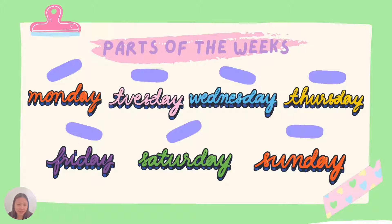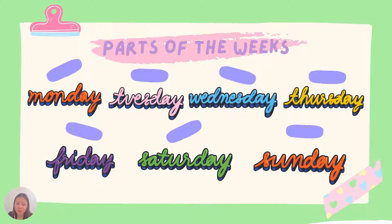What are the parts of the week? Let's have Monday, Tuesday, Wednesday, Thursday, Friday, Saturday, and Sunday. A week can be any period of seven days.